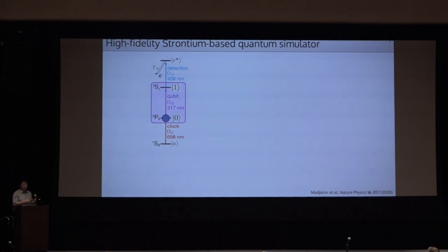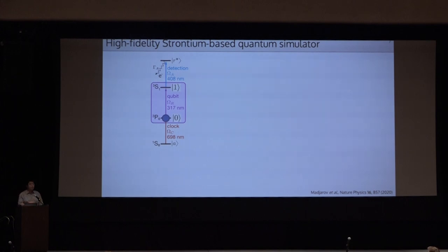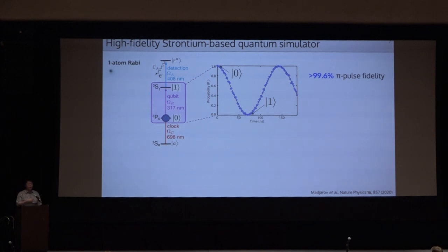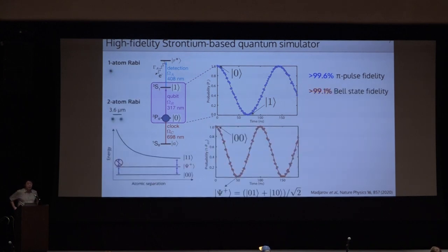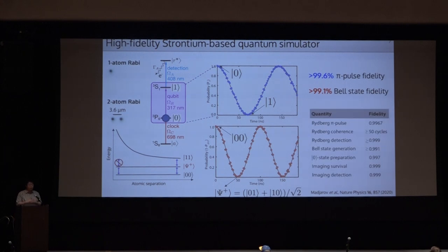In ytterbium, or strontium, here is a simplified energy diagram. Instead of working with actual ground states, we define effective ground states using metastable excited states known as clock states. You can apply a single photoexcitation to populate the Rydberg states, and using this effective two-level manifold, we demonstrated highly coherent, high-fidelity single-qubit Rabi oscillations showing a beautiful cosine oscillation. By preparing two qubits at close distance and performing Rabi quench dynamics, we can prepare maximally entangled Bell states at a certain time, achieving extremely high fidelity.